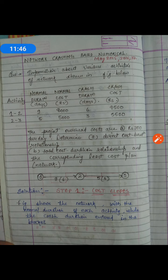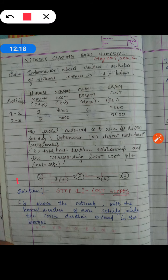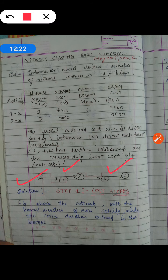The project overhead cost is 300 rupees per day. Overhead cost means indirect cost, which I explained in lecture 2 or 3. The question asks us to determine: (A) the direct cost-duration relationship, (B) the total cost-duration relationship and the corresponding least-cost plan network. The network is given with 2 activities: 1-2 and 2-3. Activity 1-2 has a normal duration of 9 days and crash duration of 6 days; activity 2-3 has normal duration of 5 days and crash duration of 3 days.